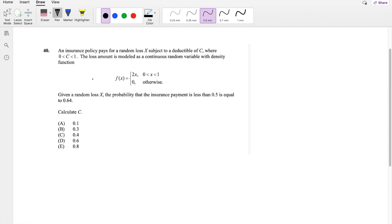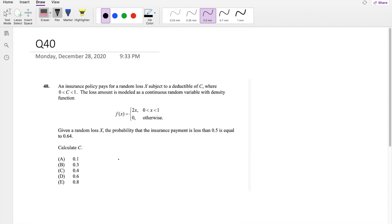Assuming you already attempted it, let's just dive right in. So they say this statement right here, given a random variable x, the probability that the insurance payment, I'm gonna denote as y, is less than 0.5 is equal to 0.64.